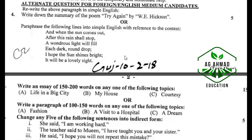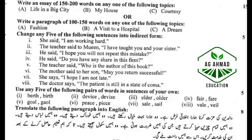Write the summary of the poem 'Try Again.' Write an essay on any topic: Life in a Big City, My House, or Curtsy. Write a paragraph: Fashion, A Visit to a Hospital, or A Dream. Change any five of the following sentences into indirect form: She said I am working hard. The teacher said to Moeen I have taught you and your sister. Use any five of the following pair of words in sentences: evil, abarth, device. Translate the following paragraph into English: والدین کی عزت کرنا ہمارا اخلاقی فرض ہے، وہ ہمارا بہت خیال رکھتے ہیں، وہ ہمیں خوراک دیتے ہیں۔